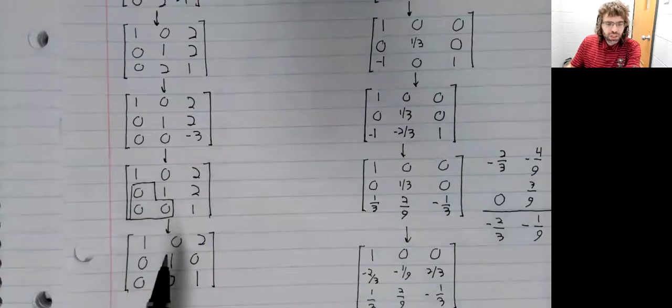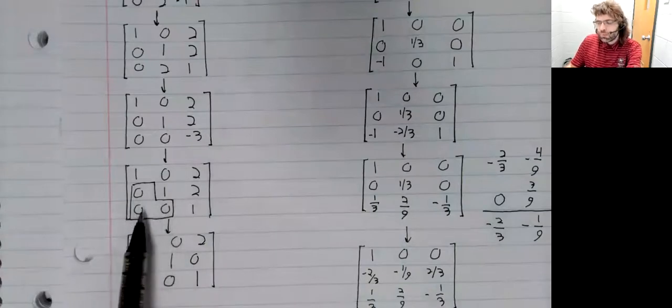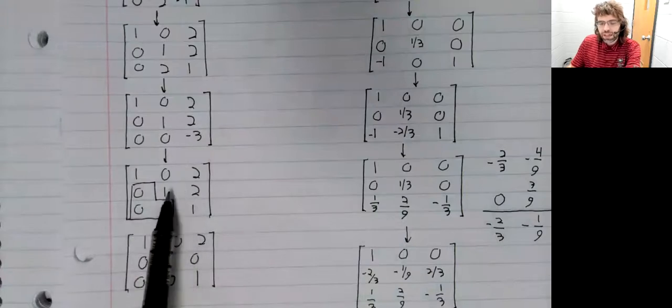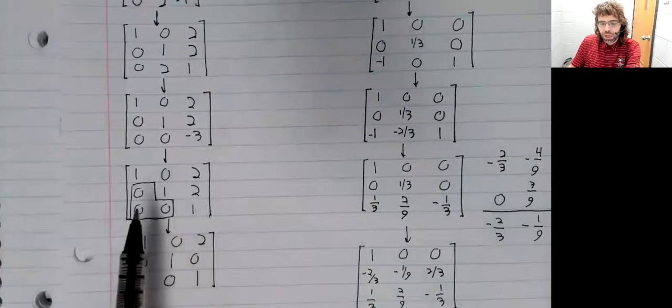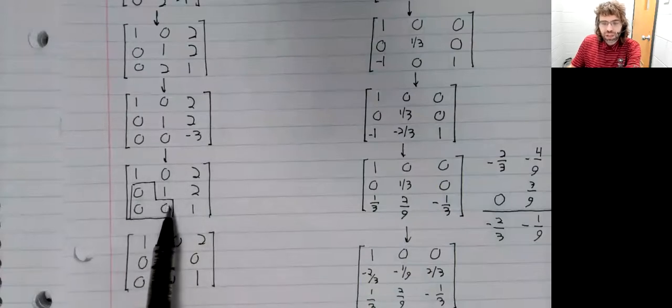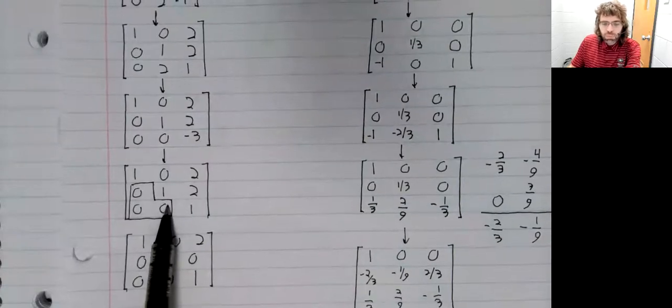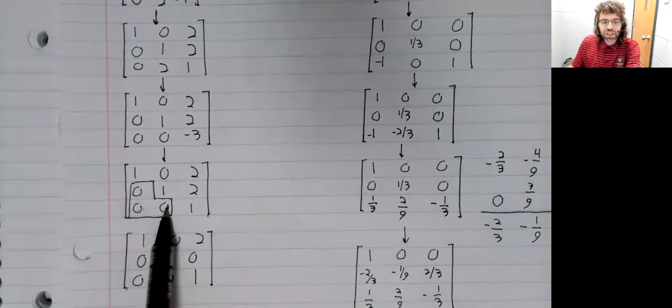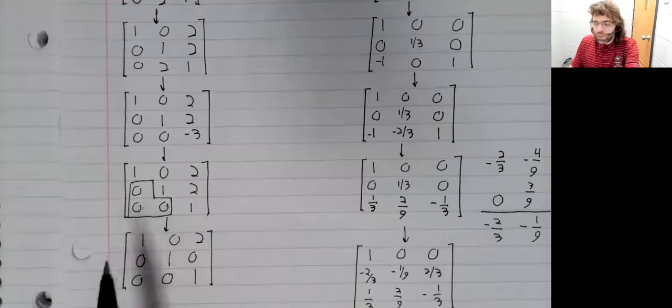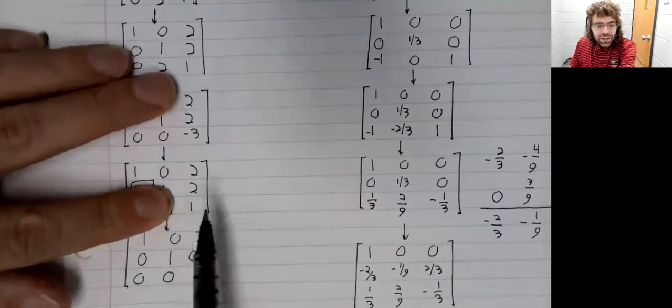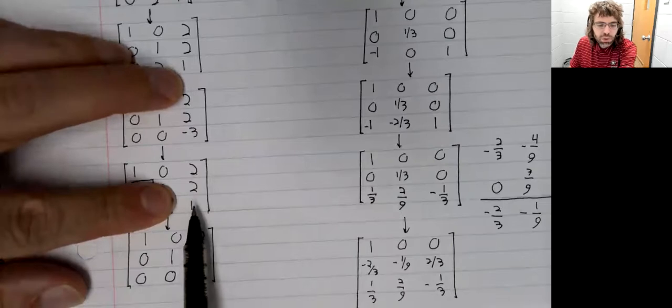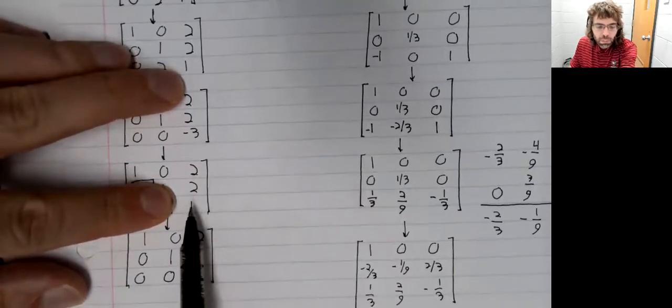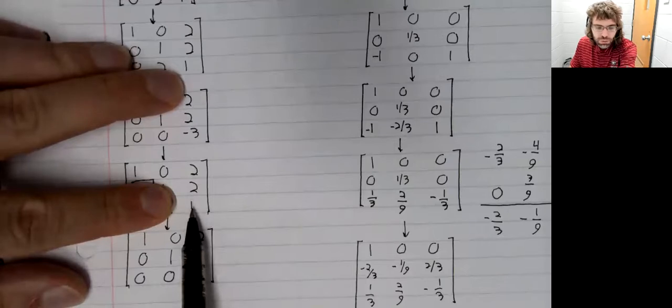Like, to go from here to here, we had to multiply the third row by negative 2 and add it to the second row. But because this was 0 and this was 0, multiplying these by negative 2 and adding them to the second row didn't do anything. In practice, we just had to multiply a single number by negative 2 and add it to the second row.